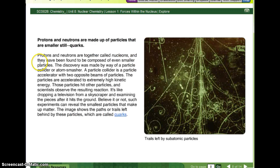Protons and neutrons are together called nucleons, and they have been found to be composed of even smaller particles. The discovery was made by way of a particle collider or atom smasher. A particle collider is a particle accelerator with two opposite beams of particles. The particles are accelerated to extremely high kinetic energy. Those particles hit other particles, and the scientists observed the resulting reaction. Okay, so they have these huge long tunnels, and they have these two beams of energy or particles, and they basically shoot them at each other and let them crash. It's like dropping a television from a skyscraper and examining the pieces after it hit the ground. Believe it or not, such experiments can reveal the smallest particles that make up matter. The image shows the path or trails left behind by these particles, which are called quarks.